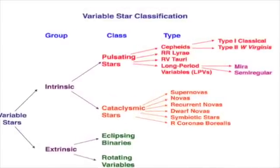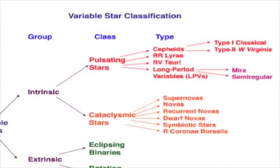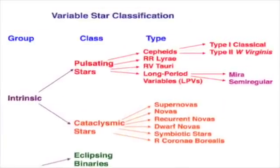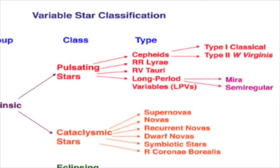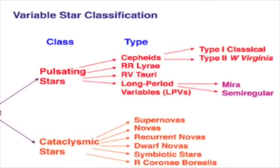Today we will be talking about variable stars. We are introducing the intrinsic group which consists of the pulsating star class, more specifically RR Lyrae and Cepheids.